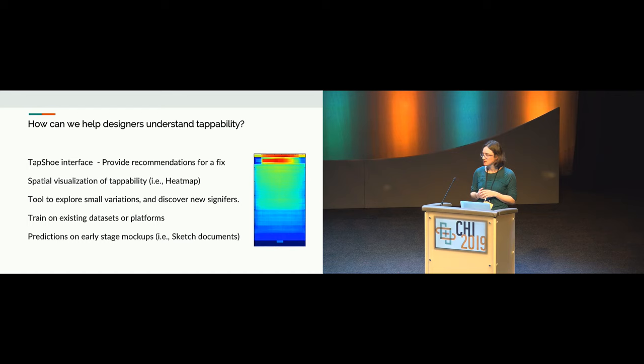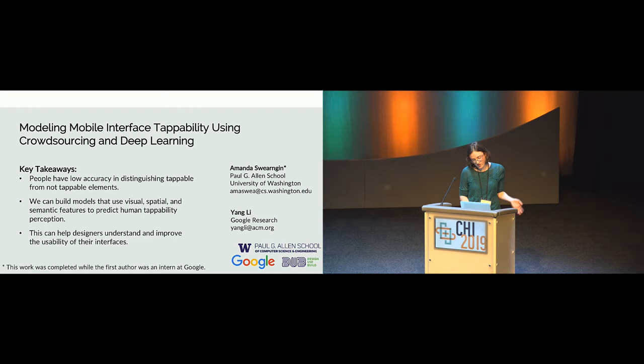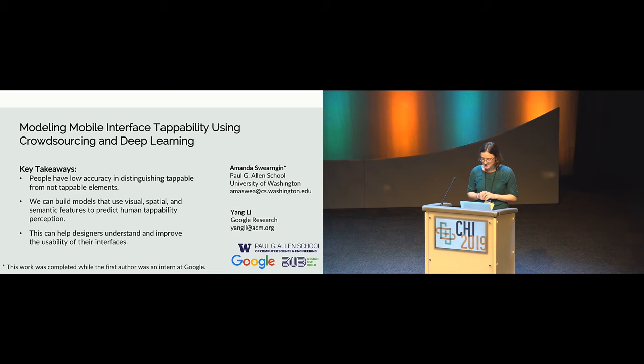To conclude, we found that people have low accuracy in distinguishing tappable from not tappable elements. But we can build models that use visual, spatial, and semantic features to predict human tappability perception. Our model performs pretty well given the amount of inconsistency in people's perceptions, and we can use this model to help designers better understand a very important aspect of the usability of their interfaces.